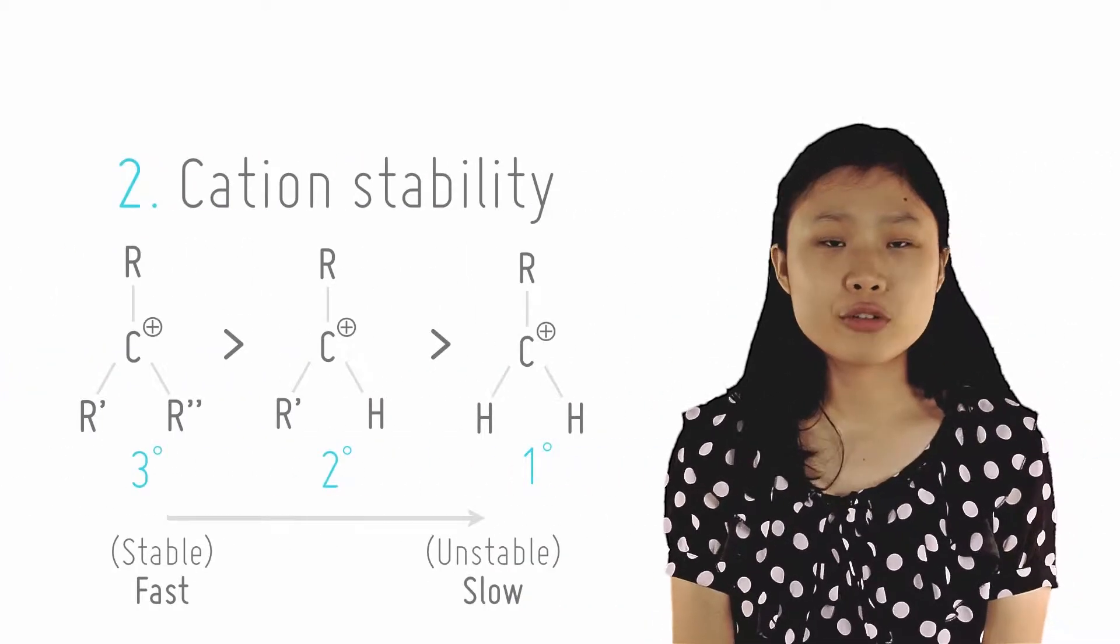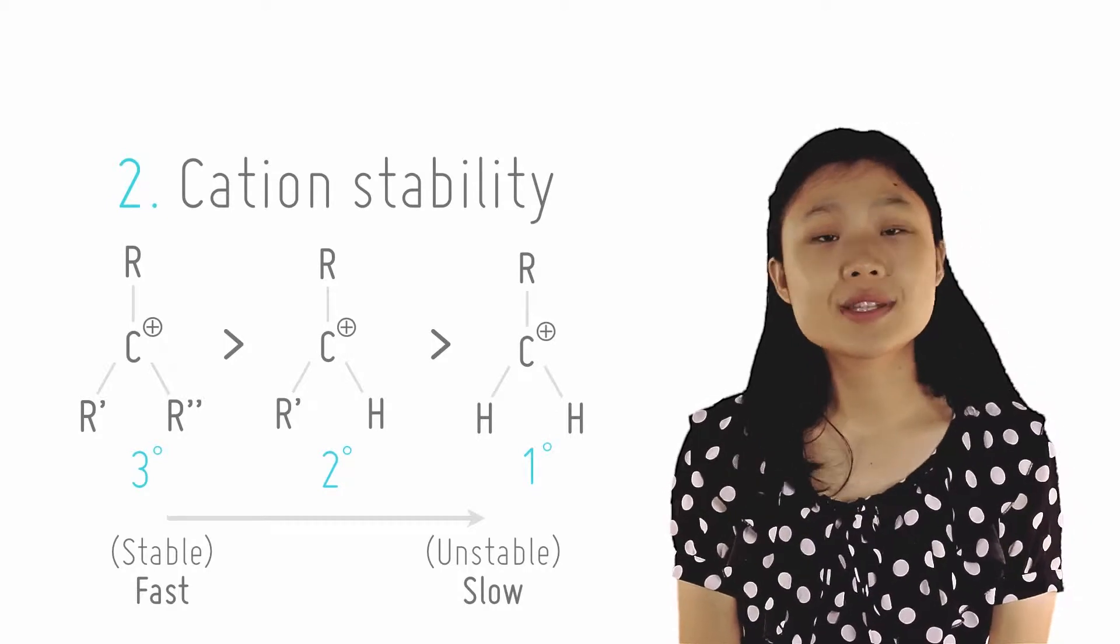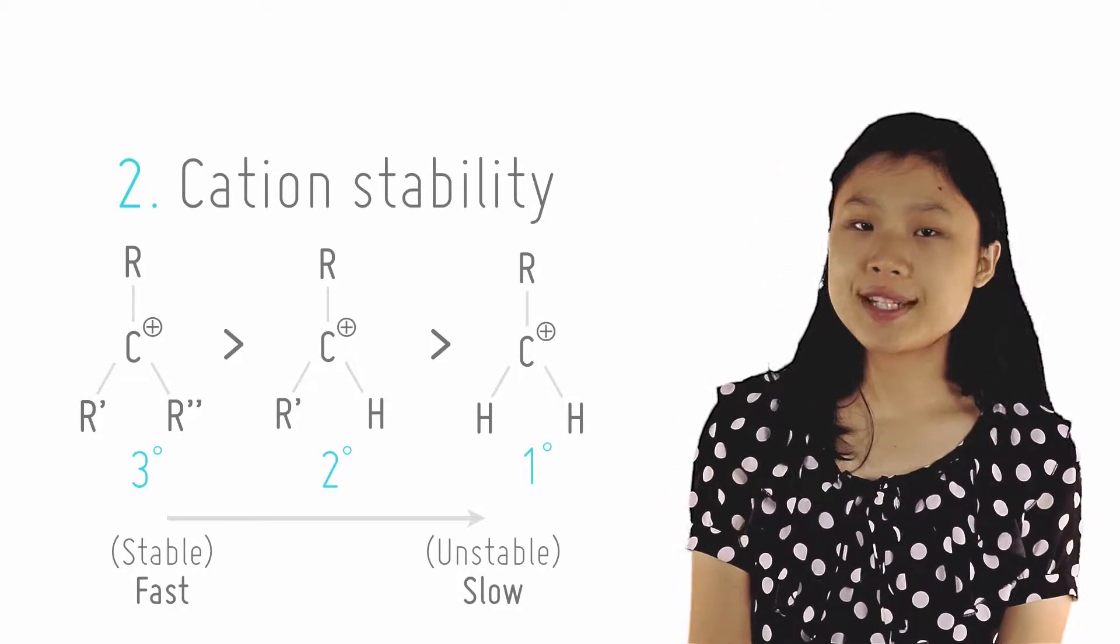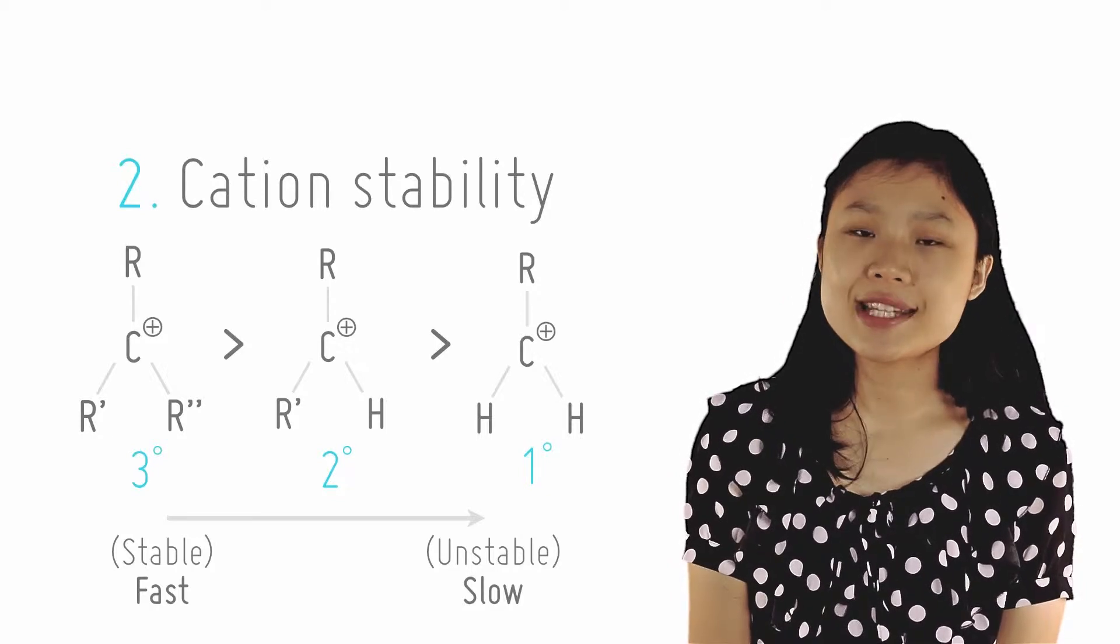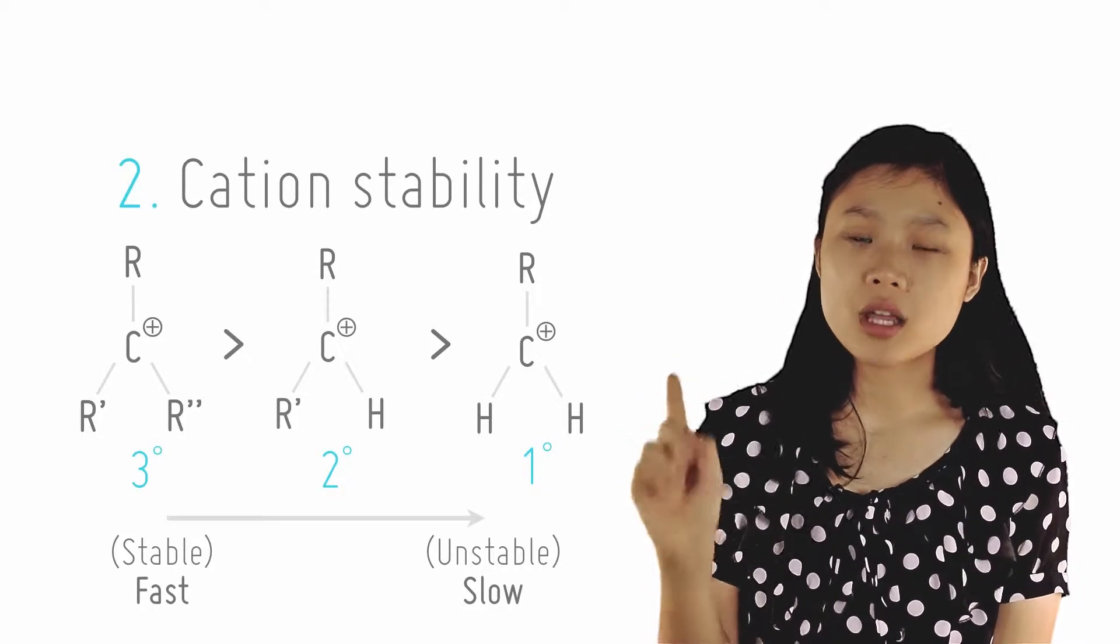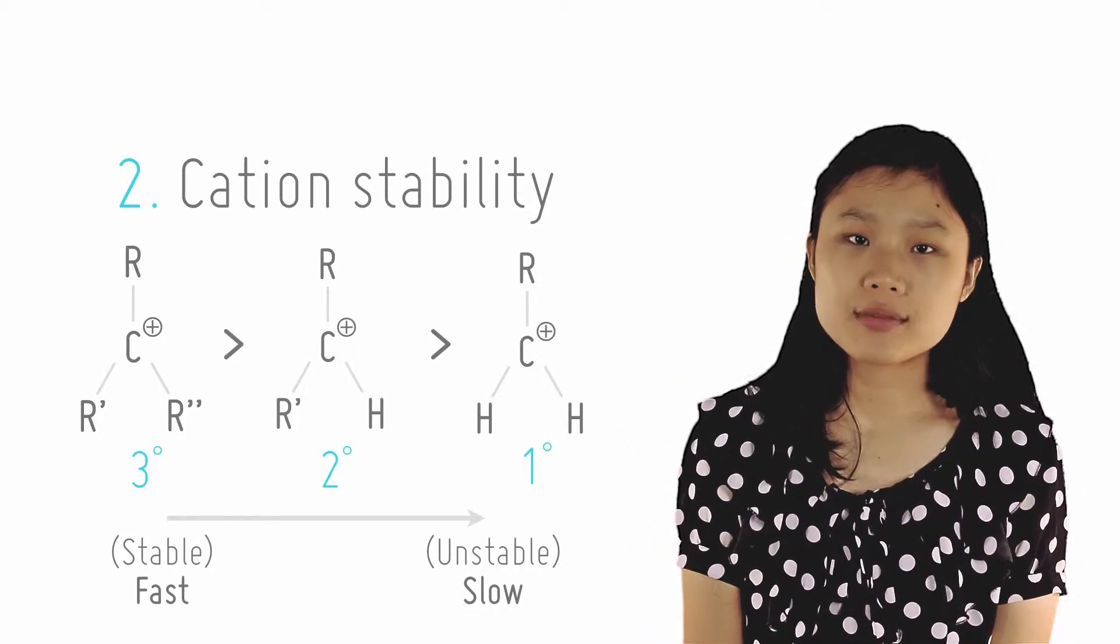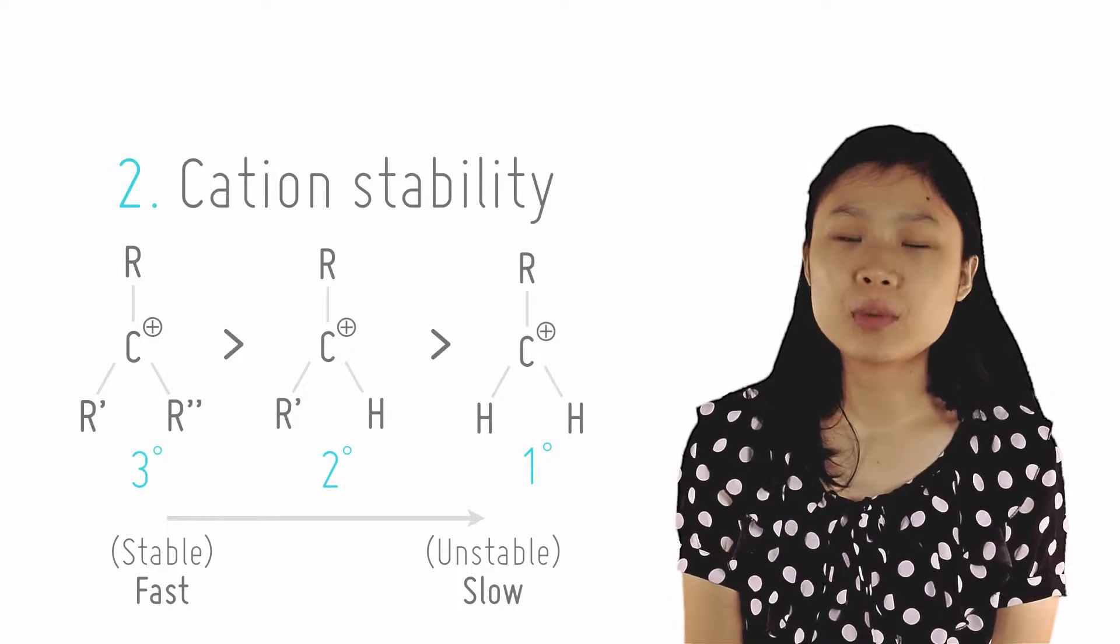The reaction is more favorable if the carbocation formed is more stable. Electron donating groups can increase the stability of the carbocation by dispersing the positive charge. Groups like alkyl groups attached to the carbocation will favor the SN1 mechanism.